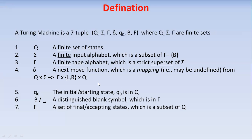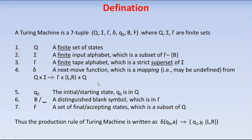Now let us see the production rule of the Turing machine. Initially we are in the starting state Q naught. On getting a particular input symbol — in this case the symbol 'a' — it goes to the next state Q naught, writes the symbol Y onto the tape, and then moves either right or left one step. This is the formal definition of a Turing machine, which consists of seven tuples.